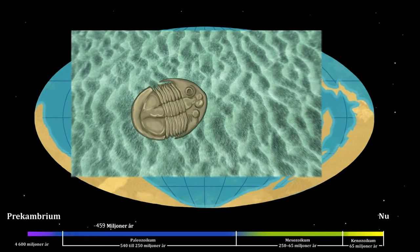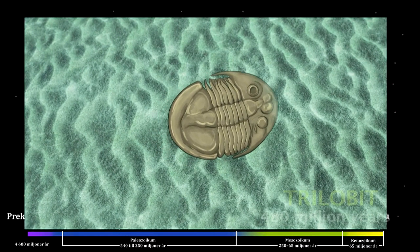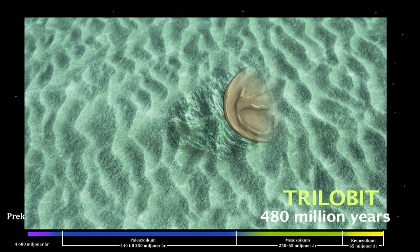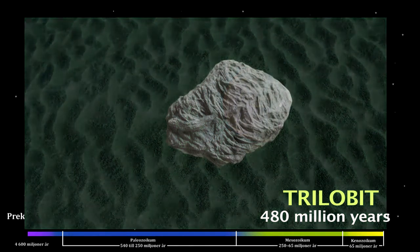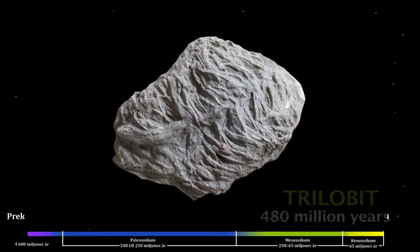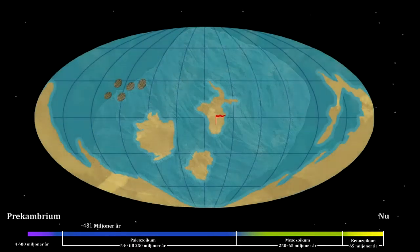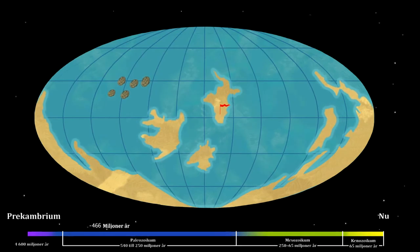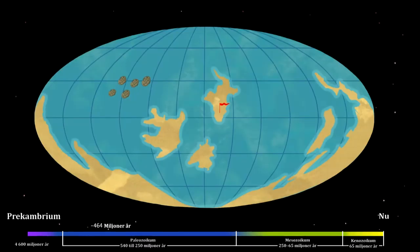You can see trilobites on the seabed — they had loads of forms in different species. Here are the tracks of the trilobite. You can see how millions of years have passed here. The red flag shows Gothenburg at that time.